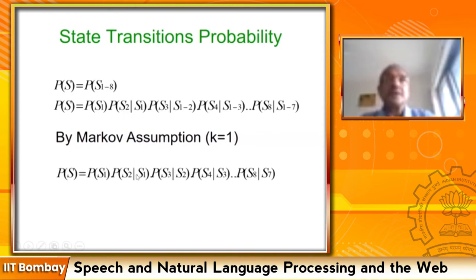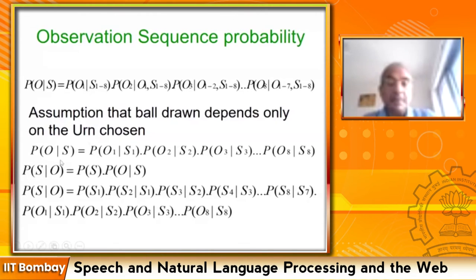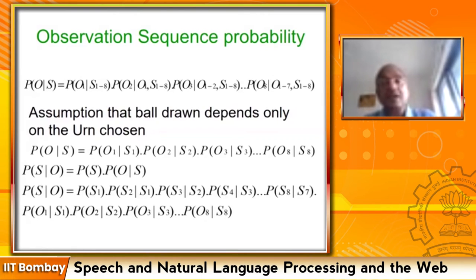The probability P(O|S) — observation given the state sequence — is again treated by chain rule and Markov assumption, giving P(o1|s1) · P(o2|s2) · P(o3|s3)... This is fine because we are given the emission/observation probability table. We now have all the wherewithal for dealing with the computation, cast as a product of transition probabilities and observation probabilities.